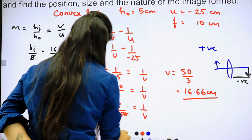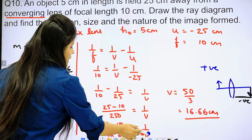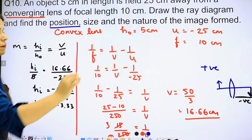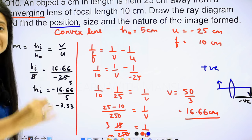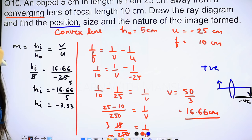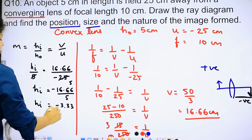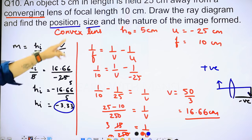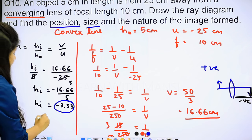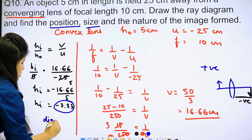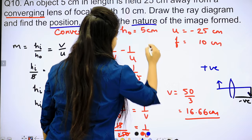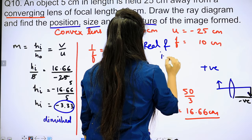So summarizing our results: Position — the image is formed at 16.66 cm from the lens. Size — the height of the image is minus 3.3 cm. Since the object height was 5 cm and the image height is 3.3 cm, the image is diminished, meaning it is smaller than the object. Nature — the image is real and inverted.